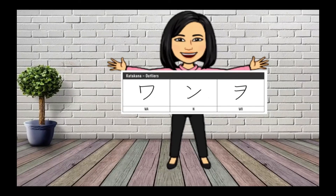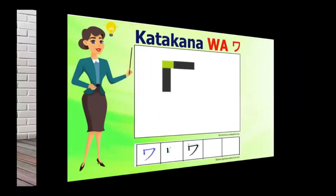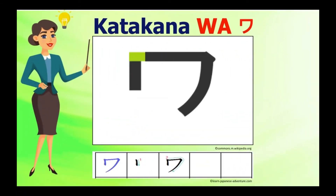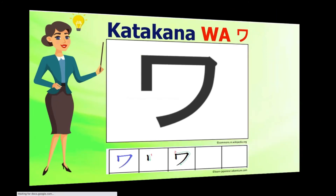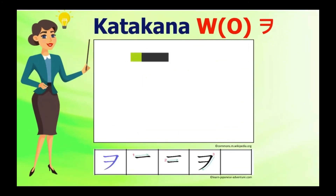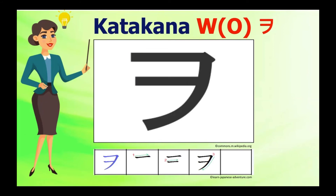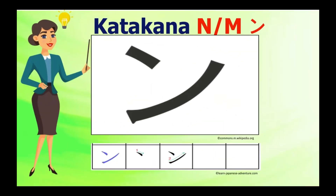Next is Wa and Wo. Katakana Wa looks like katakana vowel U without the short vertical line on top. Katakana Wo — you need to remove the short vertical line on the left side and add another line on the lower part of the first stroke. The last character is N, sometimes pronounced as 'em.' Be careful in writing N since it looks very similar to character So.